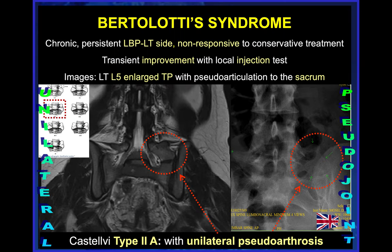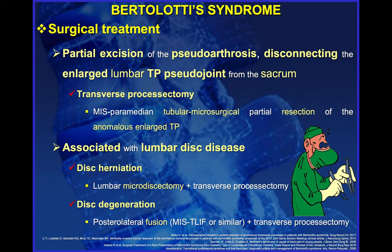Another example shows a Castelvi type 2A unilateral pseudo-joint, which is an ideal case for surgery when it fulfills the described criteria, especially temporary relief of pain after the injection test. The treatment consists of partial excision of the pseudoarthrosis related to this pseudo-joint. Essentially, we disconnect the enlarged transverse process from the lumbar spine so there is no more pressure from the lumbar spine to the pseudo-joint, which is the source of the pain. We use a MIS paramedian tubular macrosurgical approach for partial resection. Always consider the possibility of requiring surgery for an associated disc disorder, such as microdiscectomy plus transverse processectomy, or MIS mini-open TLIF plus transverse processectomy, which can be done during the same procedure.